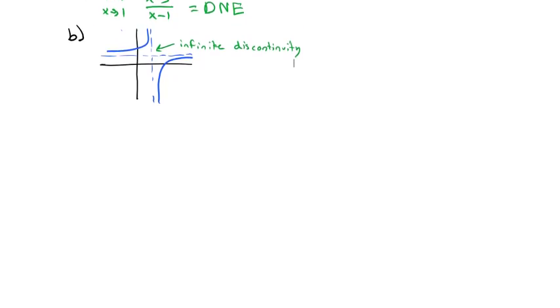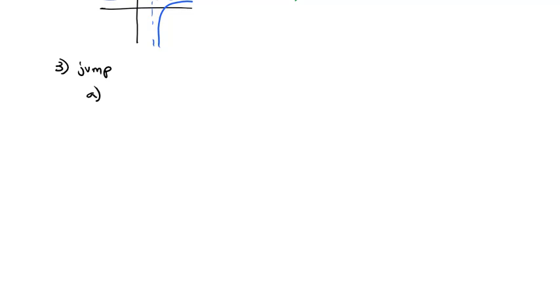The third type of discontinuity is what we call a jump discontinuity. And it does exactly what you'd expect the graph to do. It jumps. So if we have f of x equals the piecewise function x squared minus 1 for x less than 1 and x plus 1 for x greater than or equal to 1.